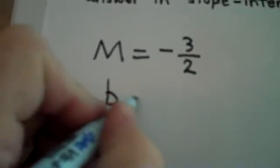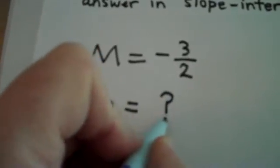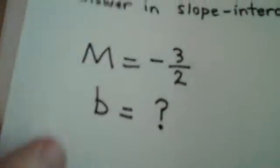Now, I also need to know b, which is the y-intercept, and I don't know it. It was not given to me. But let me show you a really clever way to get it.